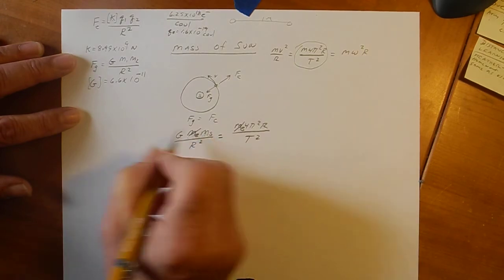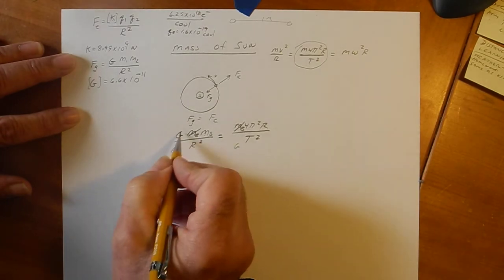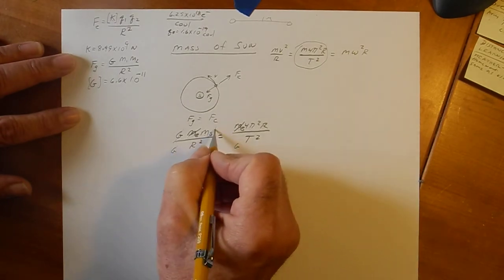What we want to do is we want to solve this for the mass of the sun. Okay, so we'll leave the mass of the sun there and move everything else over. So, I'll divide both sides by G. Okay, G's cancel. And then I'll multiply both sides by R squared.